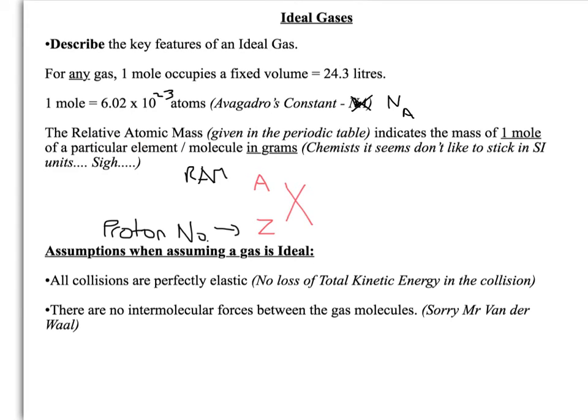Also, the relative atomic mass, so the number given in the periodic table, indicates the mass of one mole of a particular element or molecule in grams. So no SI units here. They seem to like the grams.